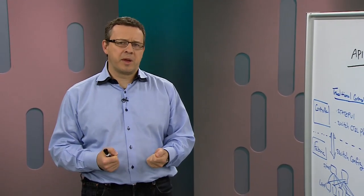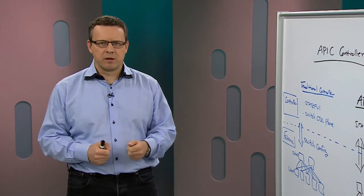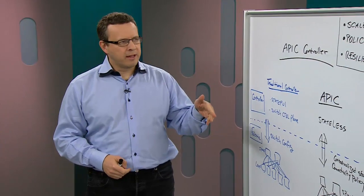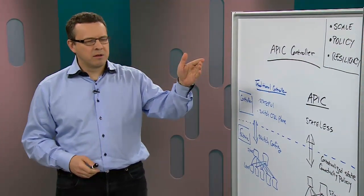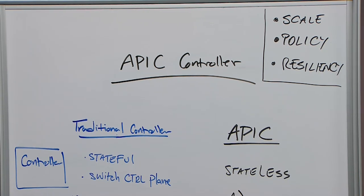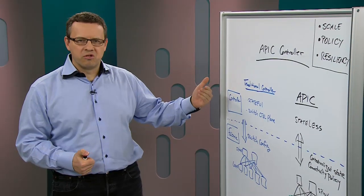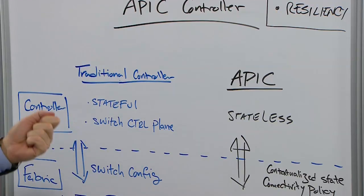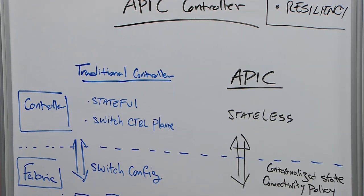What I want to talk about is the APIC controller and how this is actually differing from what you would expect from a typical network controller that everybody's talking about. The main points are scale, policy, and resiliency. Let me do a compare and contrast between what a traditional controller is doing in a networking world and what the APIC controller from Cisco is doing, which stands for Application Policy Infrastructure Controller.